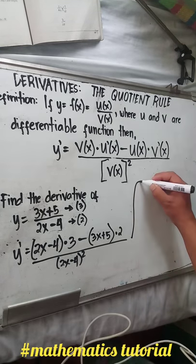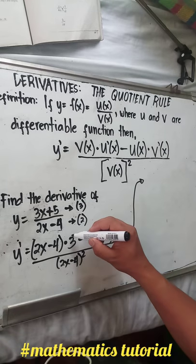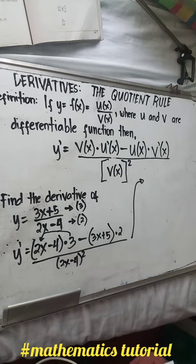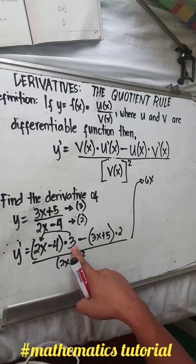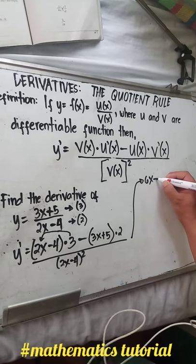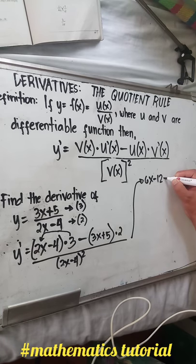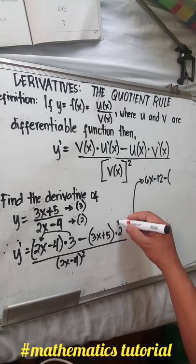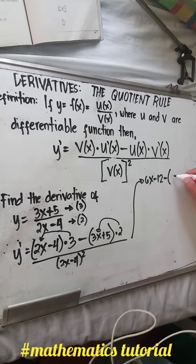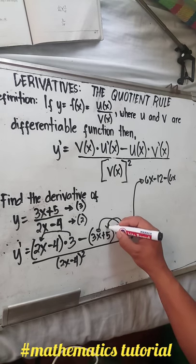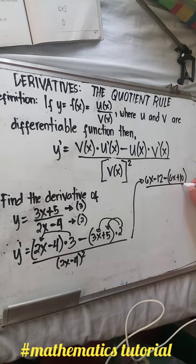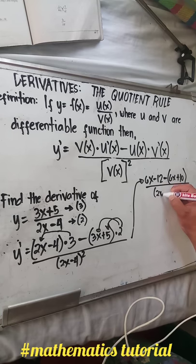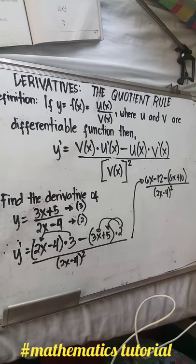Next, simplify. Distribute: 2x times 3 is 6x, and 3 times negative 4 is negative 12. Then subtract the quantity: 2 times 3x is 6x, and 2 times 5 is positive 10. All over (2x minus 4) raised to 2.